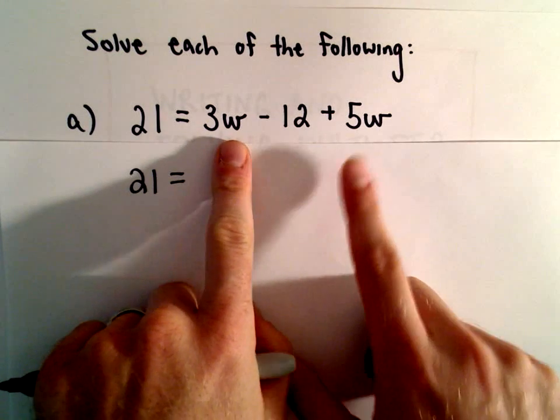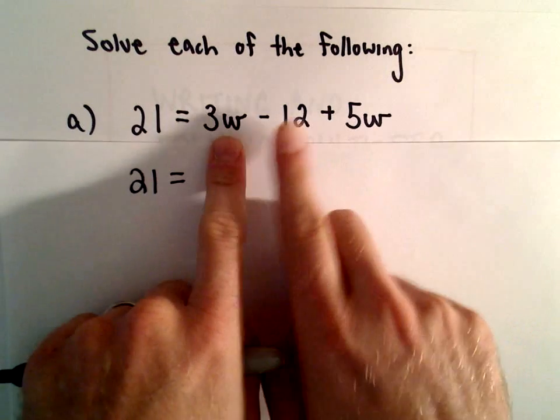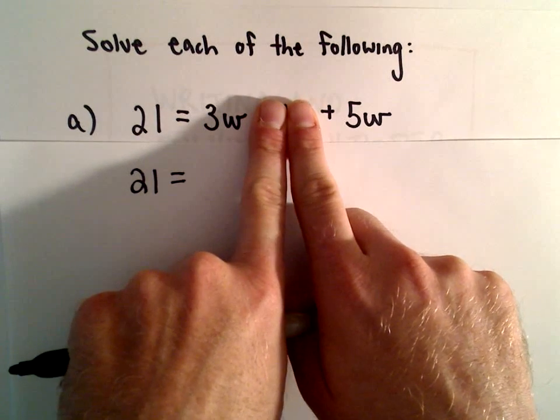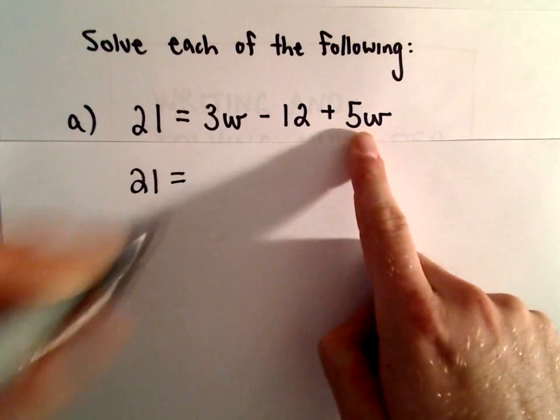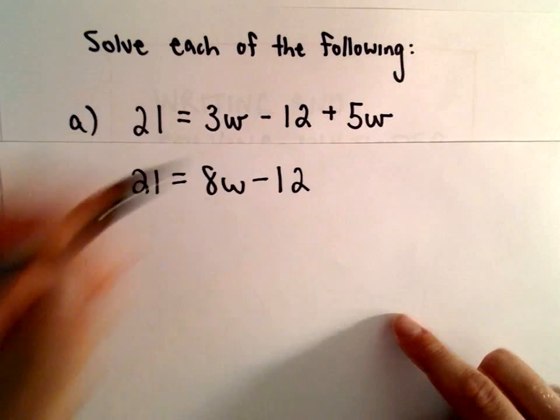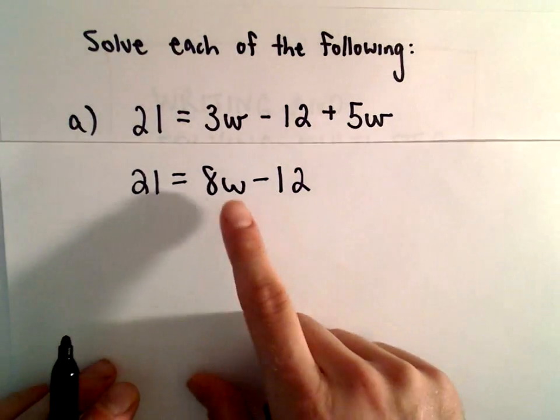I see a term involving W and another term involving W so we can simplify those. I kind of almost pretend like the negative 12 is not there. Well 3W plus 5W would be 8W. Well I do need to remember that the negative 12 is there so I just drop that down.